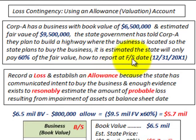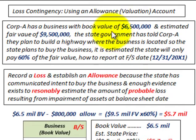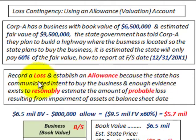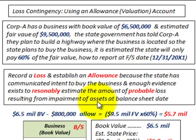The question is: how do we report this on our financial statements dated 12-31-20x1, given that the state's intention to buy was made during the year 20x1? The answer is to record a loss and establish an allowance account, because the state has communicated the intent to buy the business and enough evidence exists to reasonably estimate the amount of the probable loss resulting from the impairment of assets at the balance sheet date.